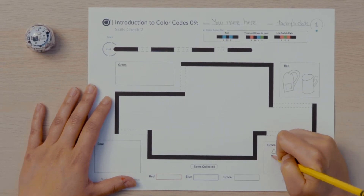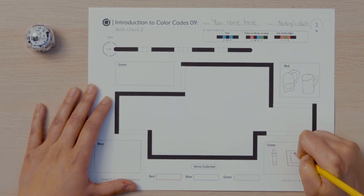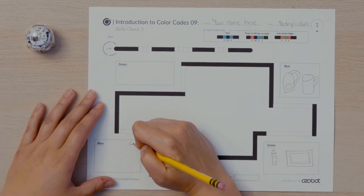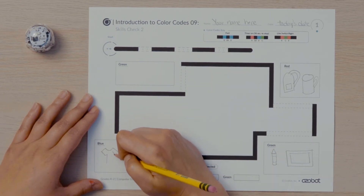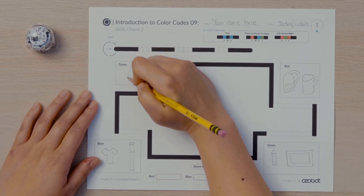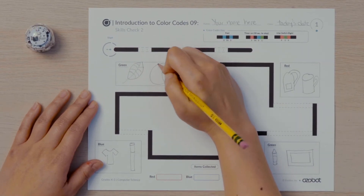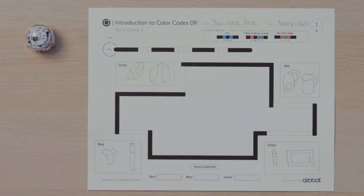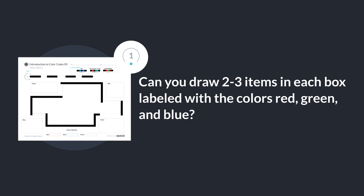I also see a green crayon, a notebook with green on the cover, and a green picture frame. I will draw these items in the box labeled green. I see a blue marker and I have some blue on my shirt, so I can draw pictures of these items in the box labeled blue. What items do you see in the room that have red, green, or blue on them? Can you draw two to three items in each box labeled with the colors red, green, and blue?